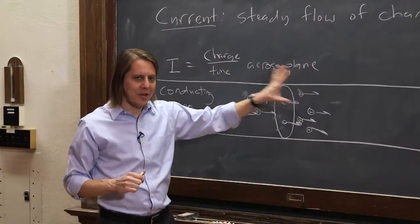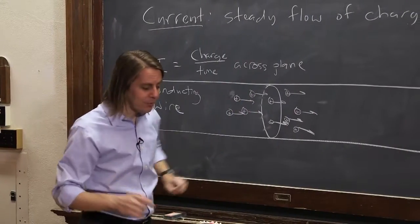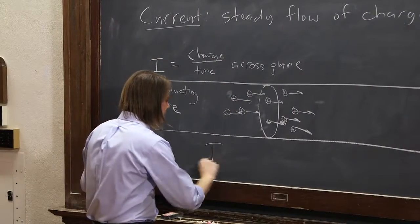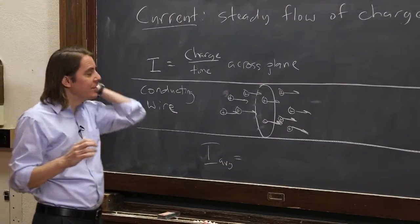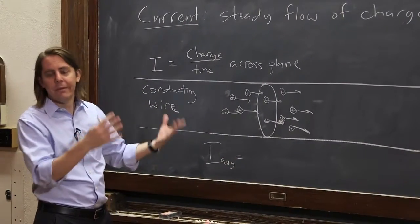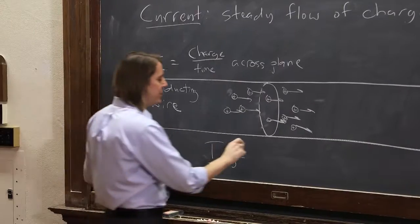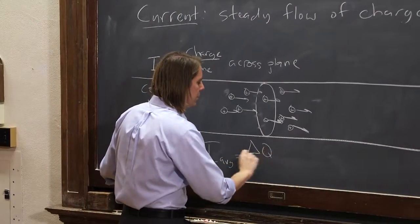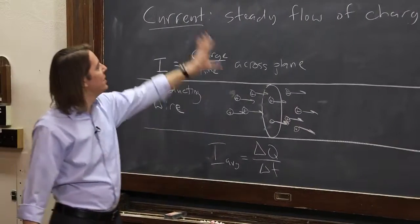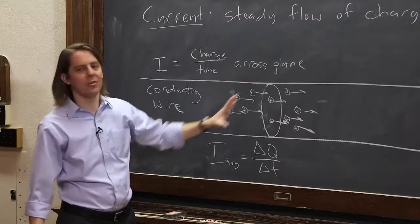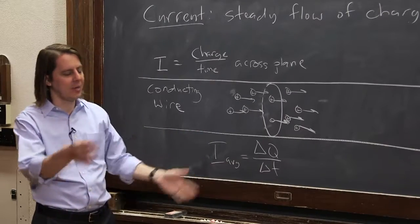When you're keeping up with that, there's kind of two kinds of current. There's the average current, which is just if it was changing and you wanted just the average over some amount of time, that would just be delta Q, the amount of charge over some delta T that flowed in that time. So that would work if it's not quite steady. Maybe it's pulsing or something. You just wanted the average, take a long time, count how many Coulombs go across.